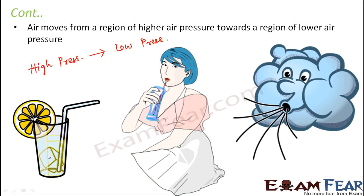In the straw example, when we suck, we remove air from inside the straw, creating low pressure inside the straw. Outside the straw there is high pressure. So air moves from the region of high pressure towards the region of low pressure, and that is why the liquid also moves with that air pressure — from outside the straw to inside the straw.